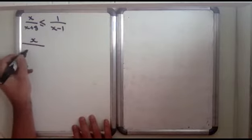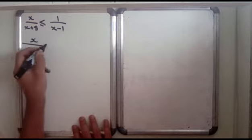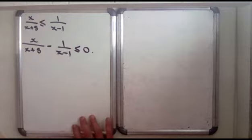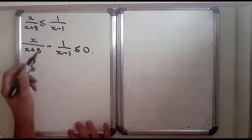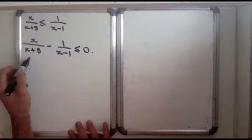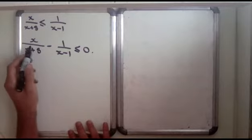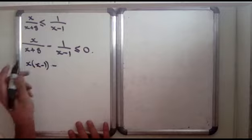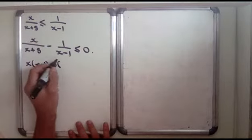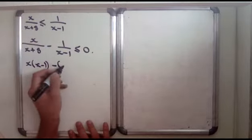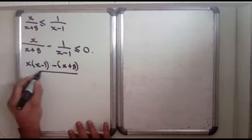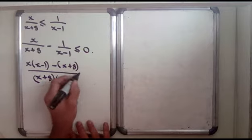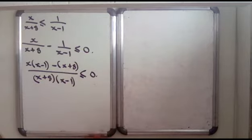So x over (x+8) minus 1 over (x-1) is less than or equal to 0. Now we're going to do a bit of work to put this into one fraction. We're going to multiply things together: x times (x-1) minus 1 times (x+8), all over (x+8)(x-1), is less than or equal to 0.